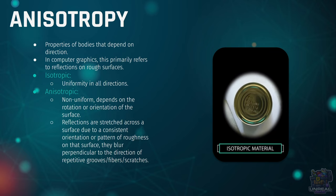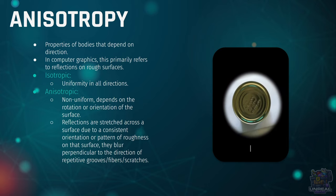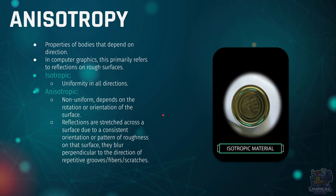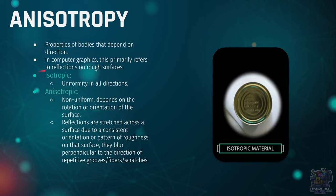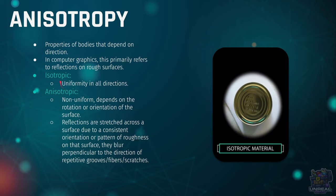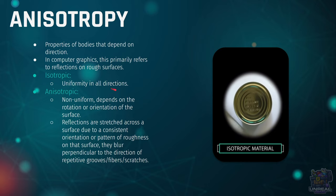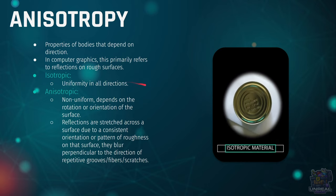Anisotropy means that some properties of certain material types can depend on direction. In computer graphics, this is going to primarily refer to specular highlights. We need to distinguish between isotropic materials and anisotropic materials. Isotropic materials is the example we see on the right, and it means that it has a uniform specular highlight in all directions.